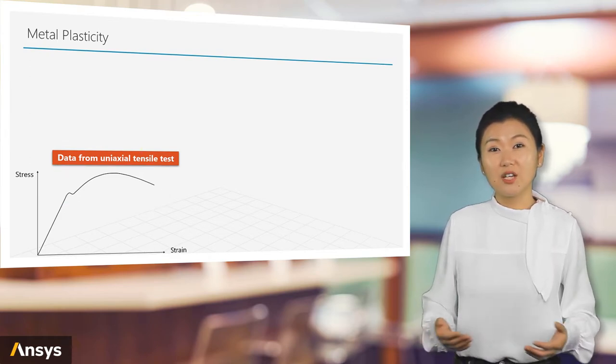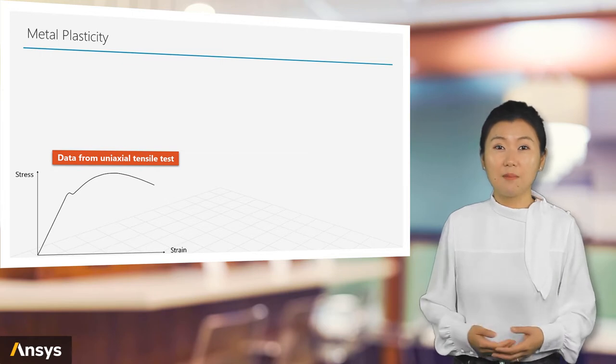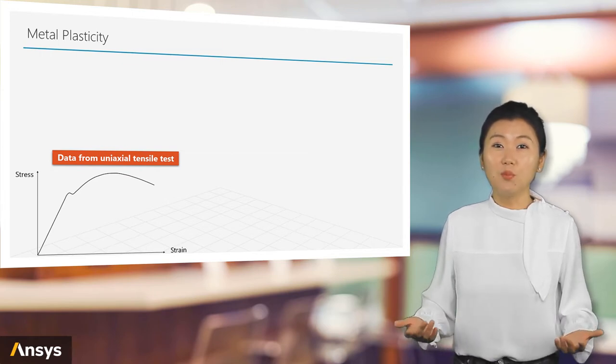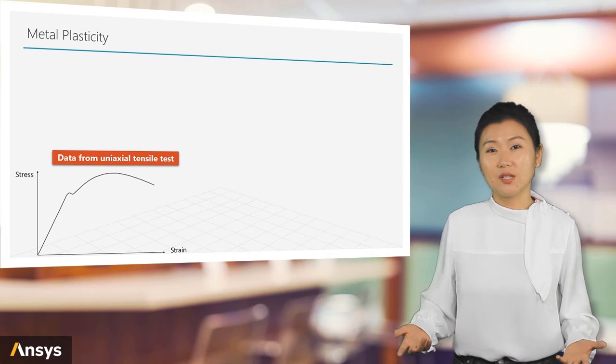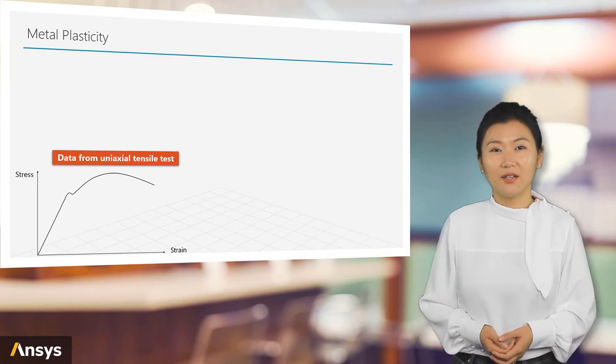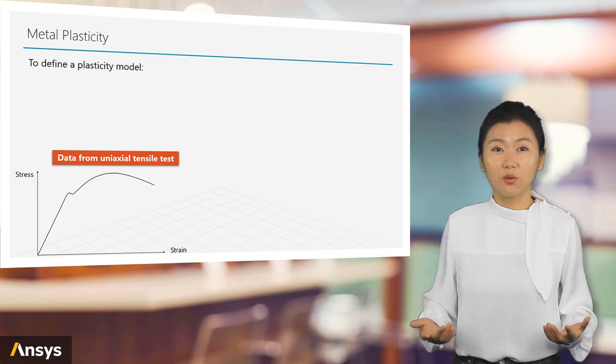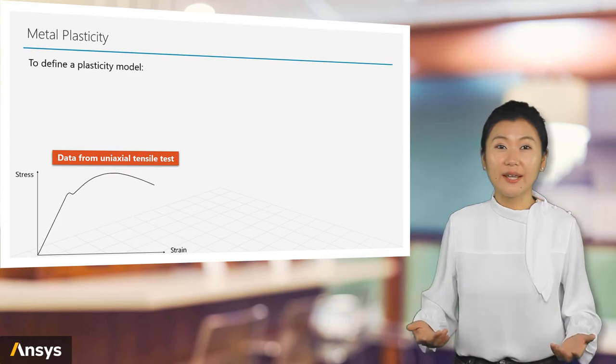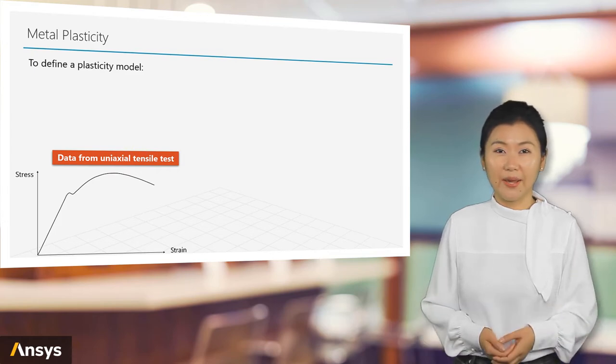If we want to capture the nonlinear behavior of a material, the mathematical model to use will be more complicated compared to a simple linear line. Plasticity is one category of material models to simulate the unrecoverable nonlinear behavior of materials.